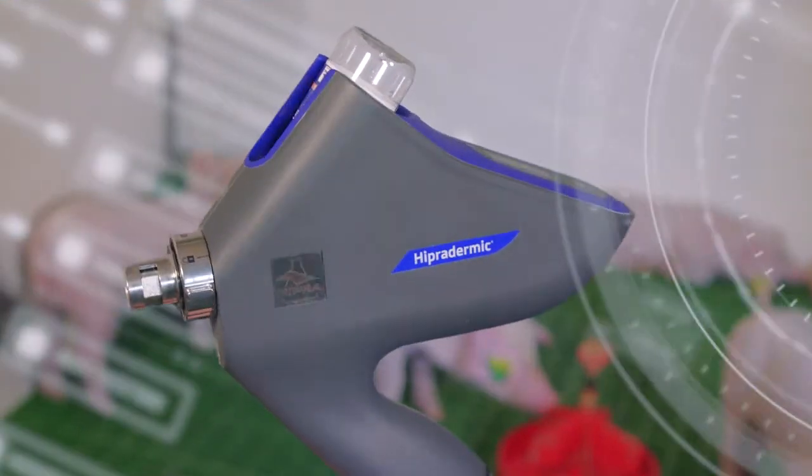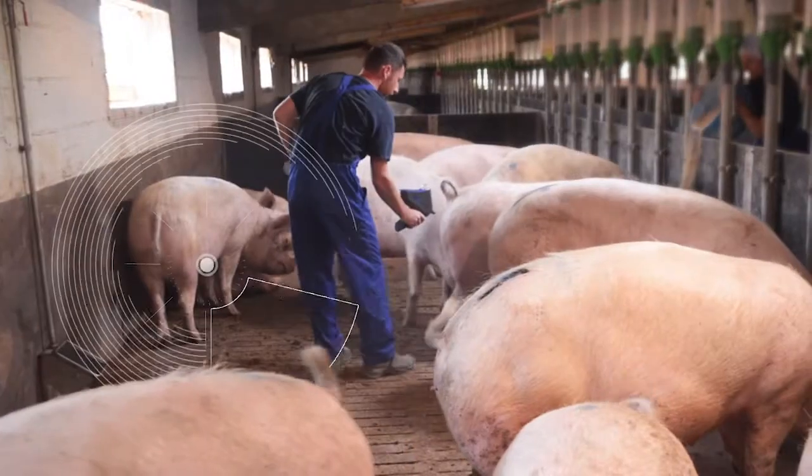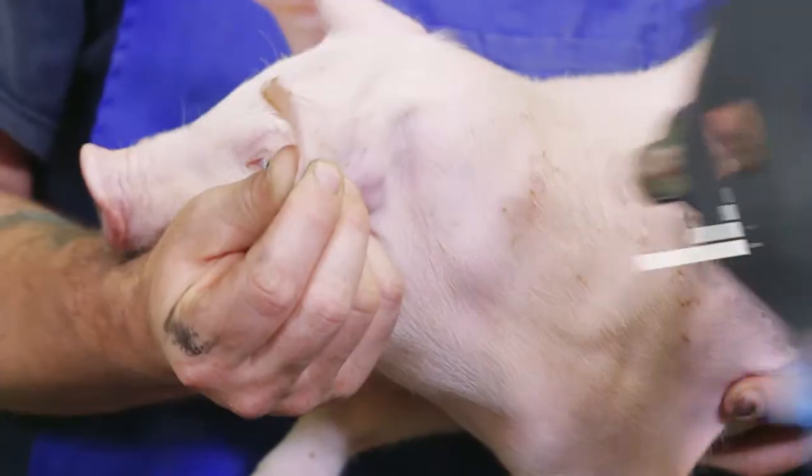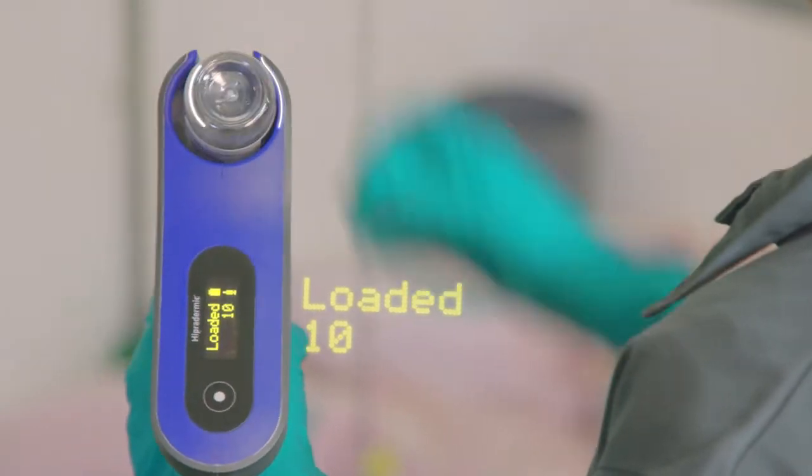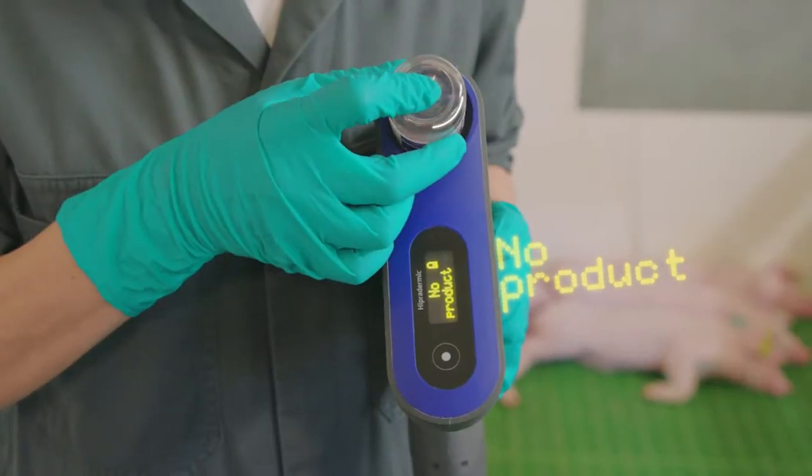Epidermic is an innovative needle-free device for the intradermal vaccination of pigs, being the first and the unique needle-free device that automatically recognizes the vaccine and traces the vaccination process.